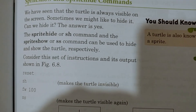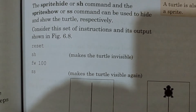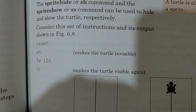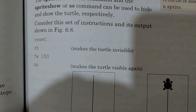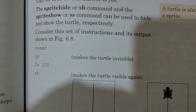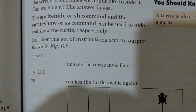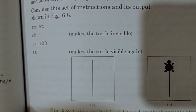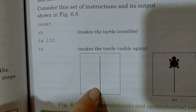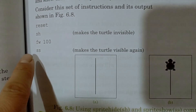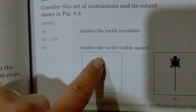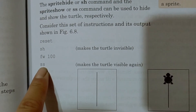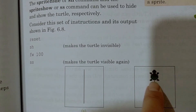Consider the set of instructions and output shown in figure 6.8. First we write reset, then sh — which means sprite hide — so your turtle will not be seen. Then forward one hundred steps. Then ss — sprite show — and the turtle becomes visible again. In the output, you can see the sprite is not visible during the forward movement, then the sprite appears after ss.